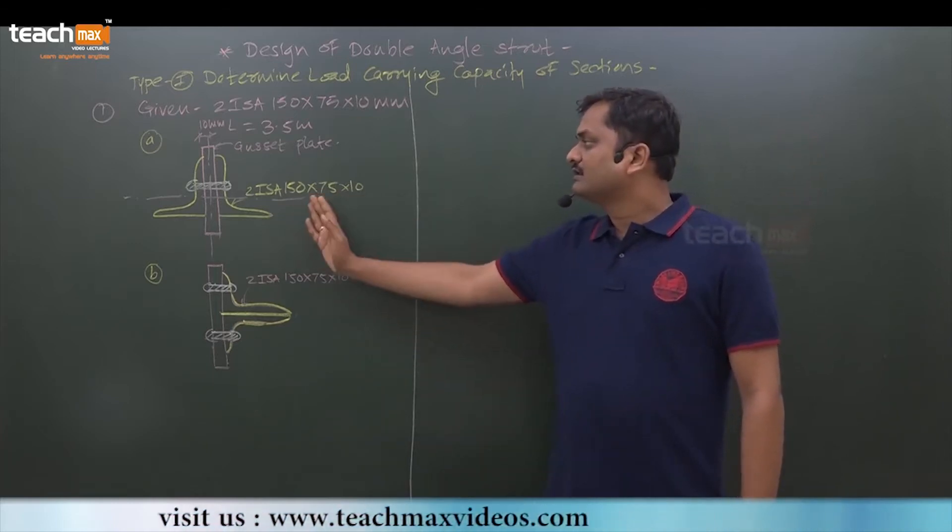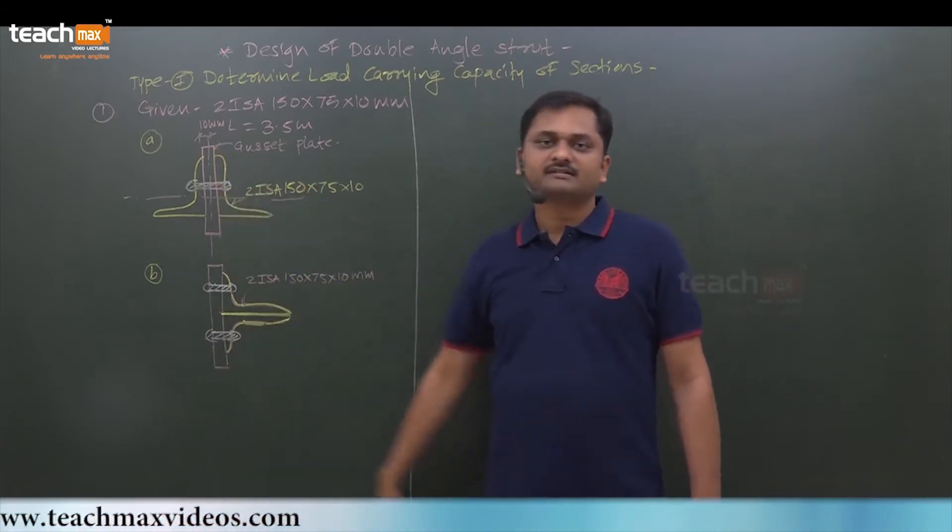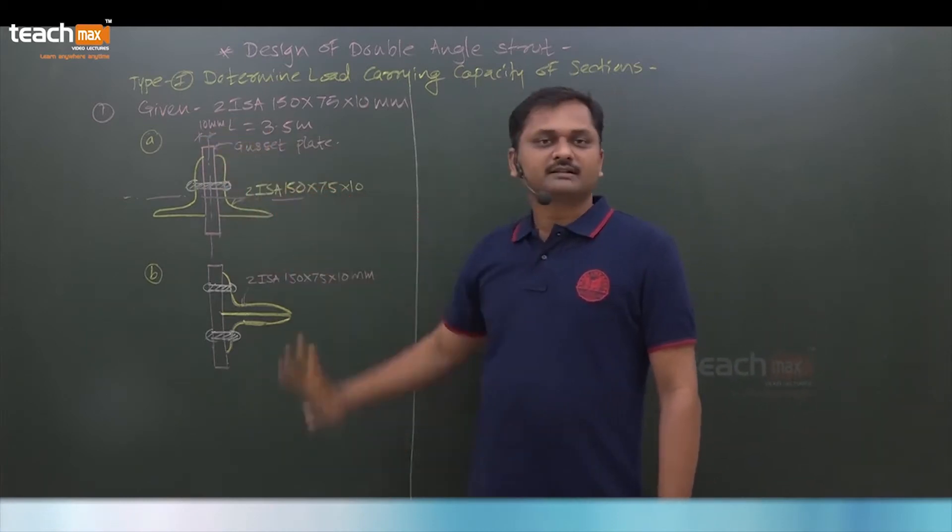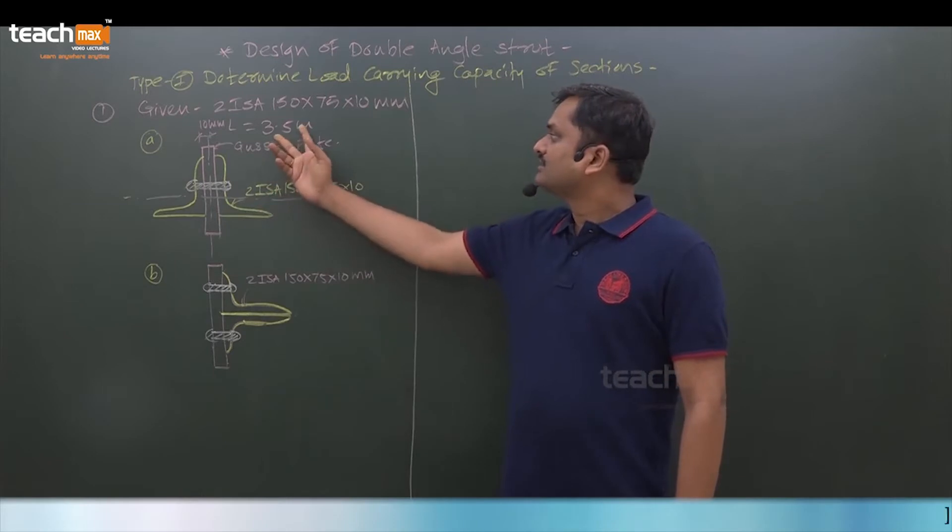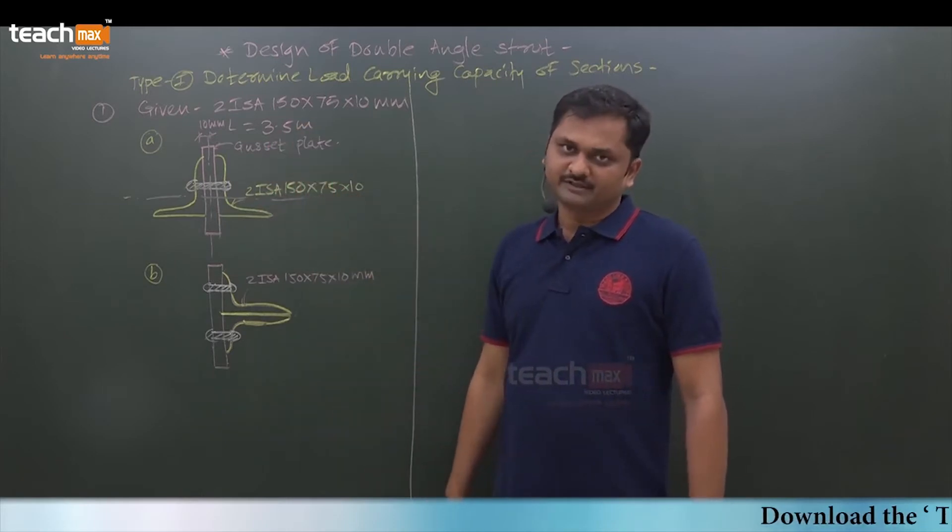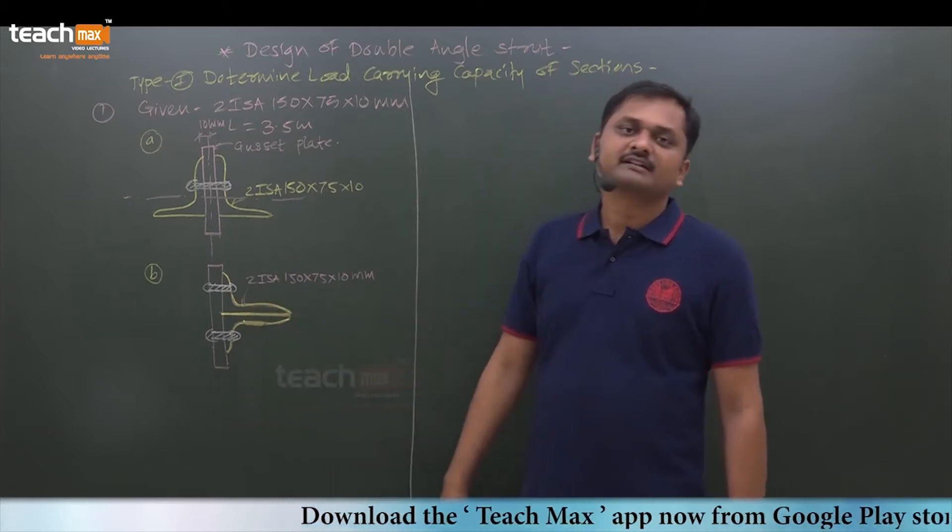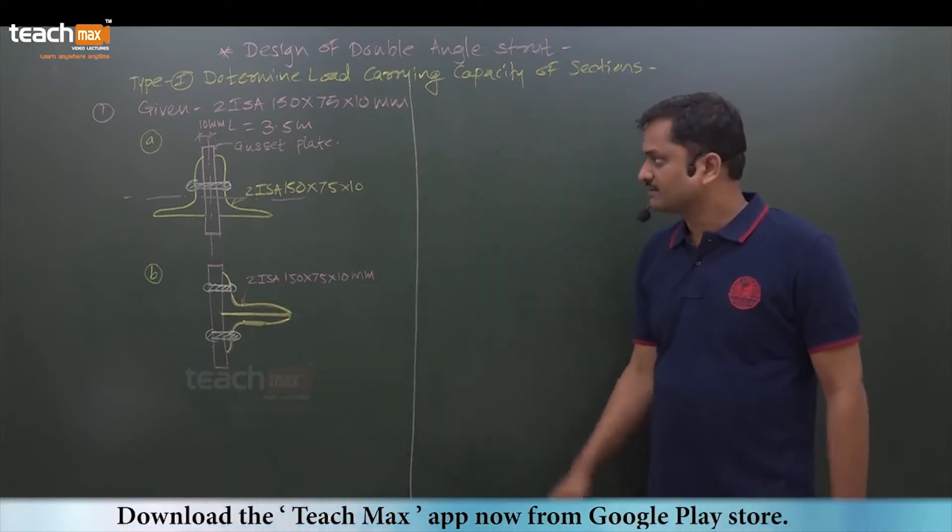Which is connected on either side of the gusset plate back to back. The thickness of the gusset plate is given 10 mm, length of member is 3.5 meters. This is one. And in the second case, both angles are connected on either side of gusset plate.